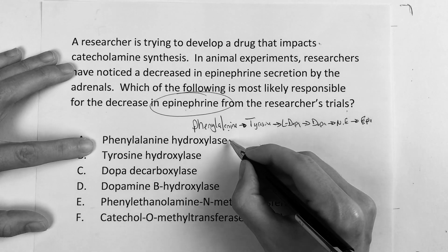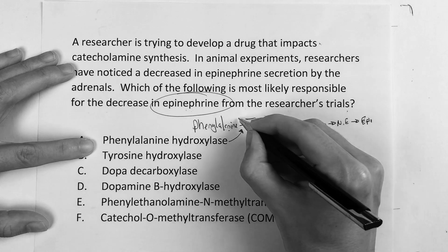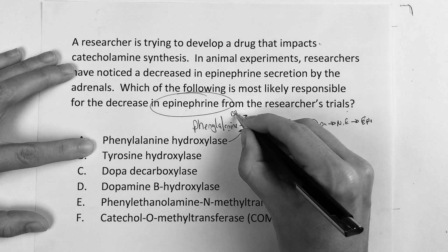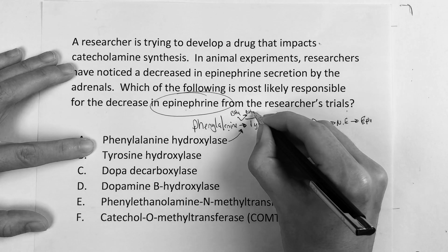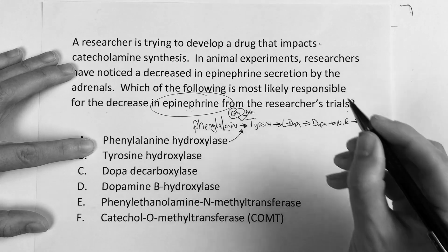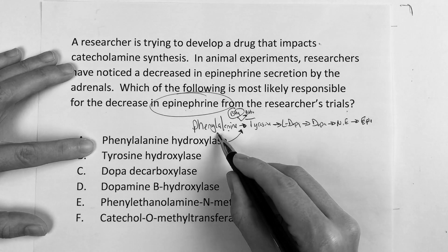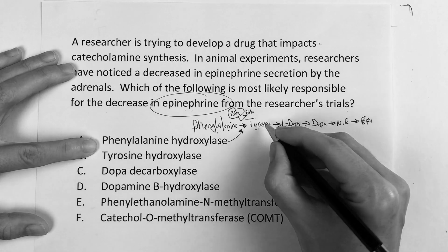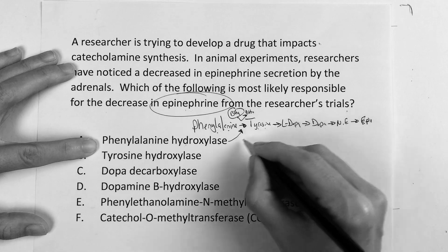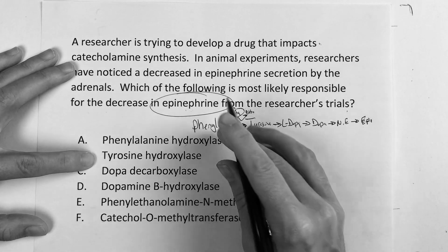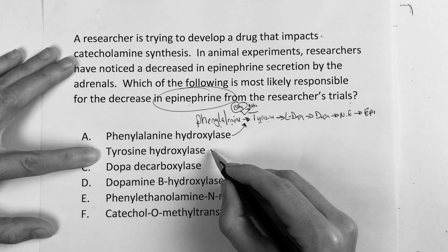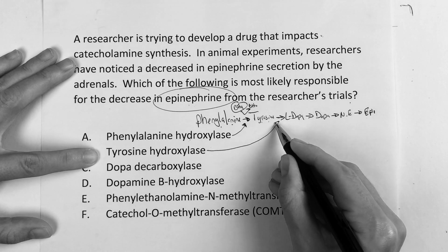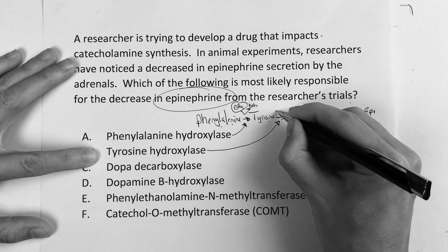In the setting of phenylalanine hydroxylase — also biopterin, make sure you know that. So phenylalanine in the setting of phenylalanine hydroxylase makes tyrosine. Tyrosine in the setting of tyrosine hydroxylase makes L-DOPA.